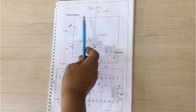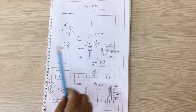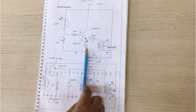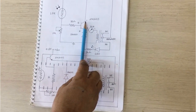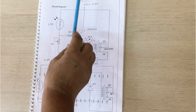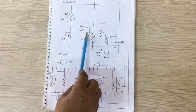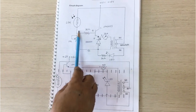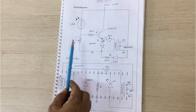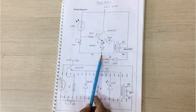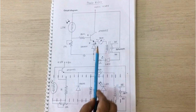Hi guys, today's practical is a photo relay circuit. In this circuit we are using one transistor — an NPN transistor, transistor number 2N3055. The transistor's collector is connected to the VCC, and through VCC we are connecting one LDR. The LDR's other end connects to the base. In the middle point of the base we are using a biasing resistor of 1 kilo ohm, and here we are connecting a potentiometer through the ground.